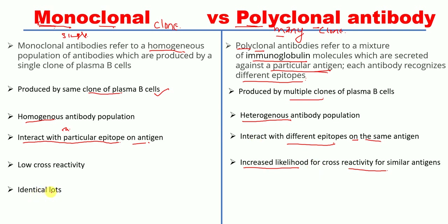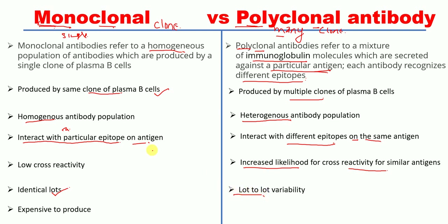Monoclonal antibodies have very less lot-to-lot variation — different lots are essentially identical. But for polyclonal antibodies there is lot-to-lot or batch-to-batch variation. Finally, monoclonal antibodies are expensive to produce, whereas polyclonal antibodies are less expensive to produce.